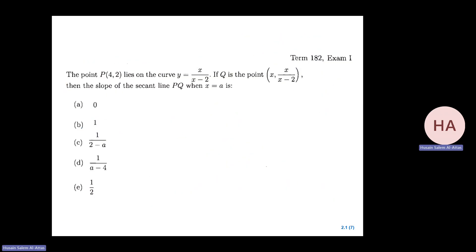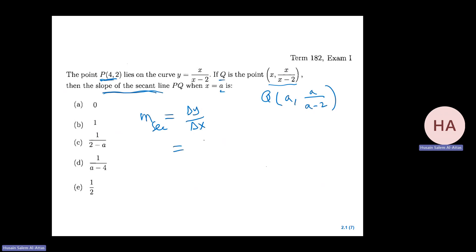Now let us do some problems. The point P lies on the curve. We have another point Q, the general one for any X. He wants the slope of the secant line PQ when X equals A. So Q is (A, A/(A-2)). We want the slope of the secant line — I don't need a limit, just the secant. That is delta Y over delta X, which gives me [A/(A-2) - (-A)/(2)] / (A - 4)... let me do it in steps: that will be [A - 2(A-2)] / (A-2) over (A-4).